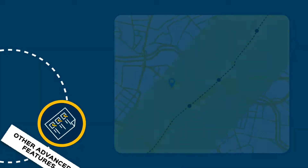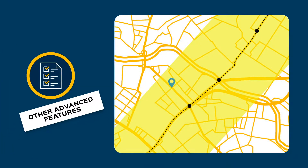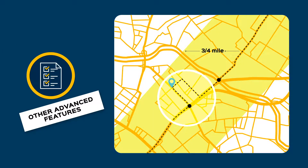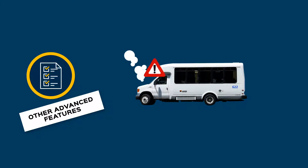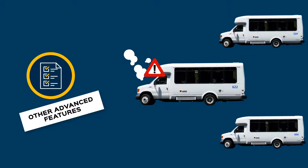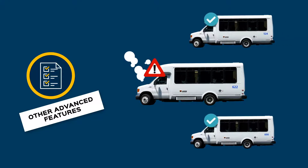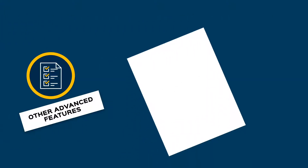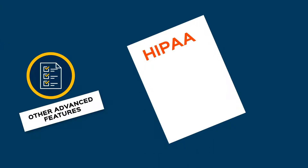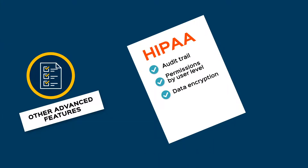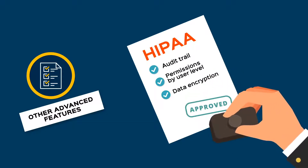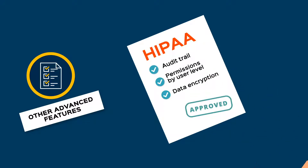Other advanced features include built-in deviated fixed-route functionality, a vehicle breakdown wizard to make assigning trips to supporting drivers a breeze, and tools to enable HIPAA compliance such as audit trail, permissions by user level, and data encryption — these are only some of the additional features Novus DR has.